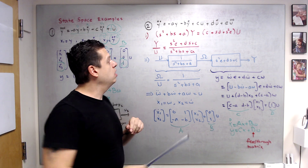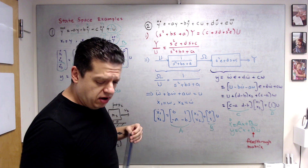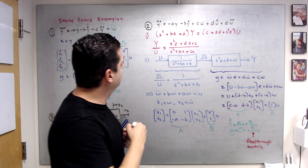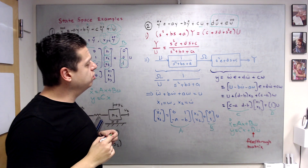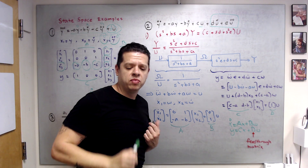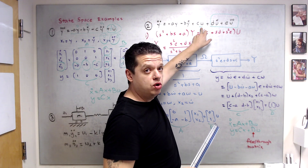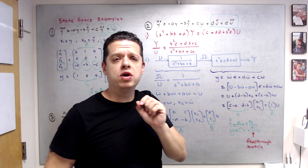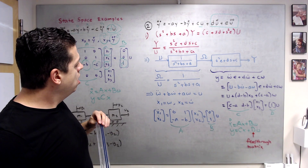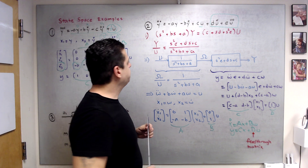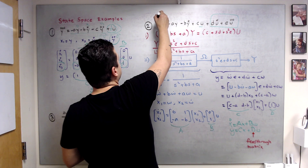For the second example, the highest order of the output y is two, but this is slightly more complicated because we have not only u but also its derivatives. Whenever you have an ODE with input derivatives, you follow a two-step procedure. Step one: go to the Laplace domain, subject to zero initial conditions.